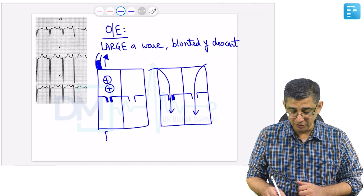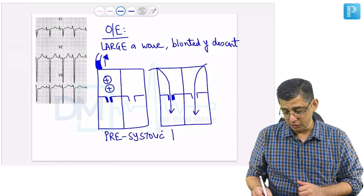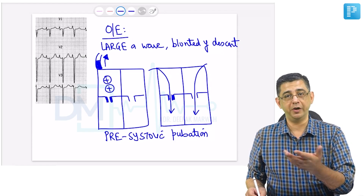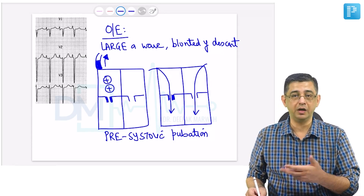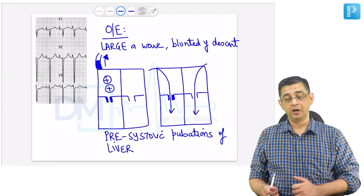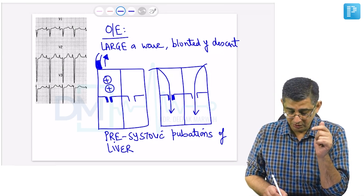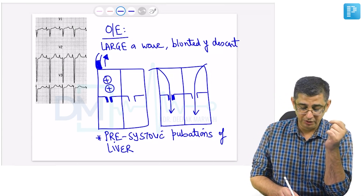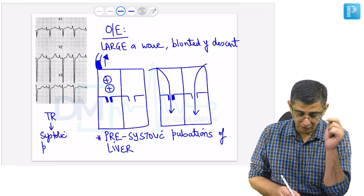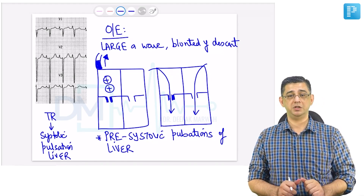Another very characteristic feature is pre-systolic pulsations of the liver — not systolic pulsations. Systolic pulsations of the liver are a feature of tricuspid regurgitation, which I'll discuss subsequently, because tricuspid regurgitation operates during systole. In tricuspid stenosis, the pulsation occurs when the heart is relatively relaxing, so pre-systolic pulsations of the liver is the feature. A pulsatile liver is seen in both TS and TR, but in tricuspid stenosis the pulsation will be pre-systolic, and in tricuspid regurgitation it will always be systolic.